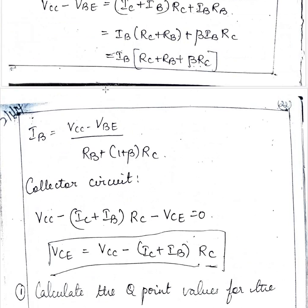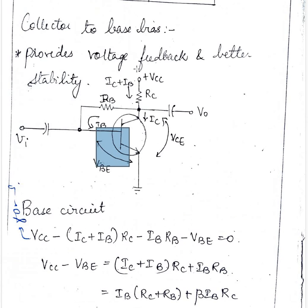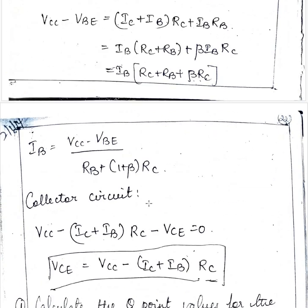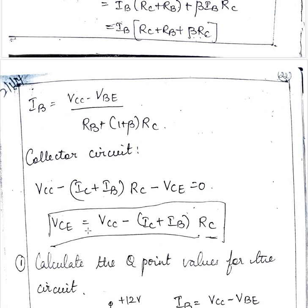Then writing the KVL for the output collector side it is VCC minus IC plus IB into RC minus VCE equal to 0. So we have equation for VCE equal to.